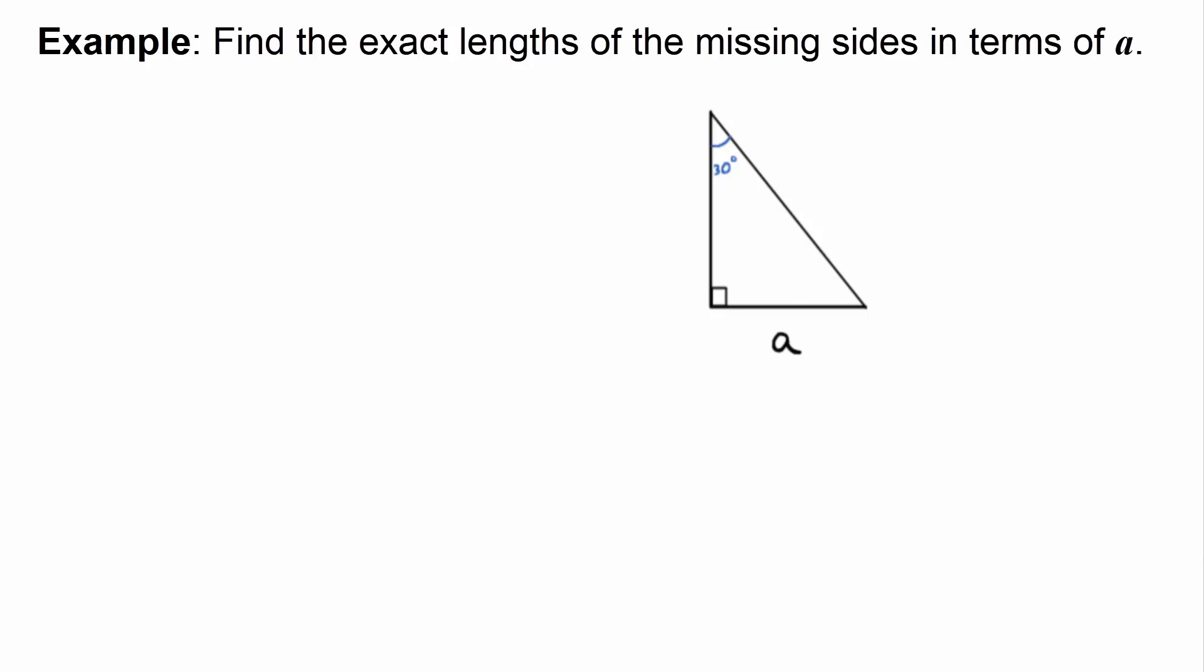Find the exact lengths of the missing sides in terms of A. So I've got one side of length A, and I don't give you any other sides, but I do tell you it's a 90 degree triangle, right? So with this guy, it's a 90 degree triangle. I know that from that symbol right there. And I do know one angle is 30 degrees. What does that mean the other angle has to be? Because these two angles are complementary, they have to add to be 90, so this angle is 60 degrees.